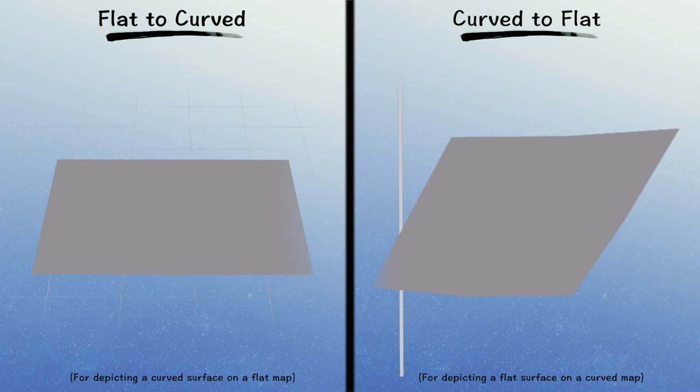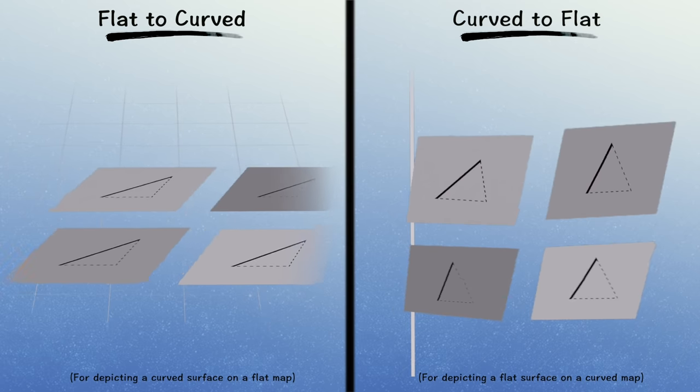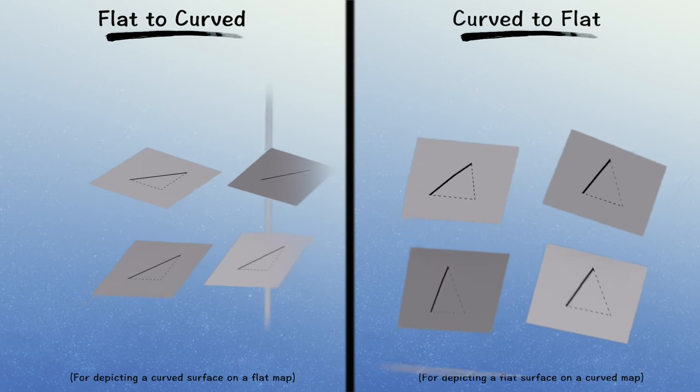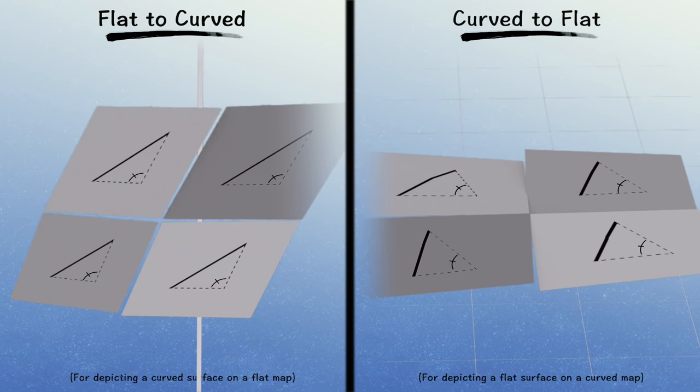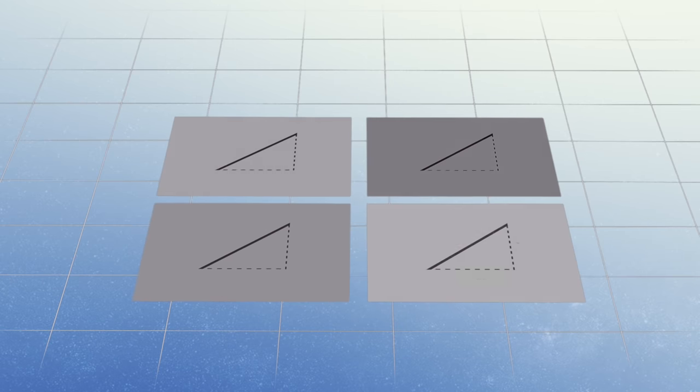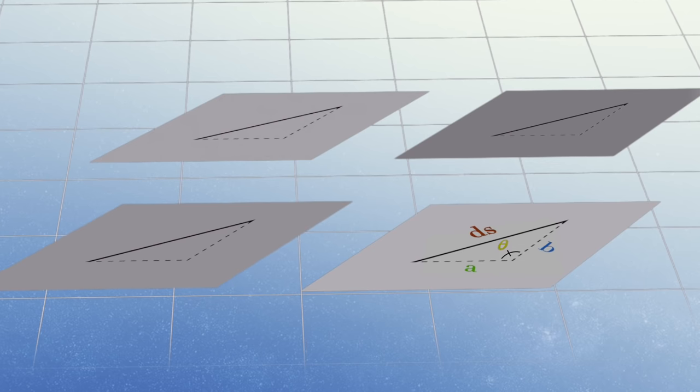Because this process takes a distance element that is a right triangle, and turns it into a distance element that is an acute or obtuse triangle, your distance goes from being described by the Pythagorean theorem,